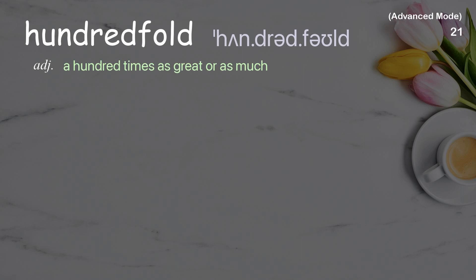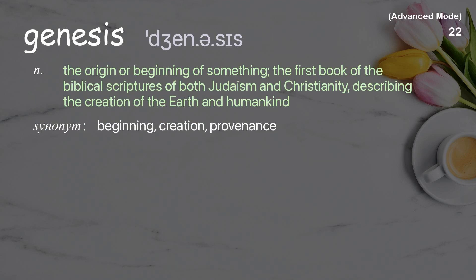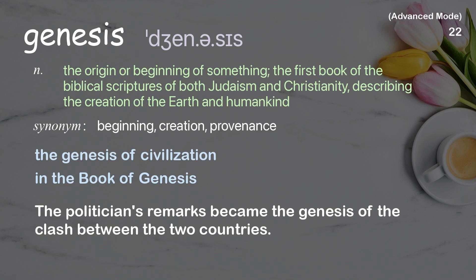Genesis: a hundred times as great or as much; in the book of the biblical scriptures of both Judaism and Christianity, describing the creation of the earth and humankind. Examples: the genesis of civilization, in the book of Genesis. The politician's remarks became the genesis of the clash between the two countries.